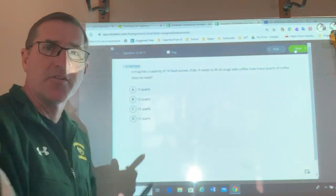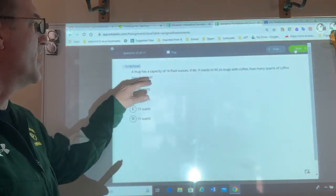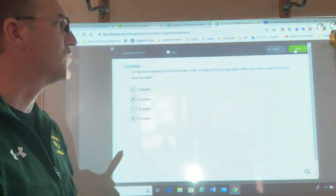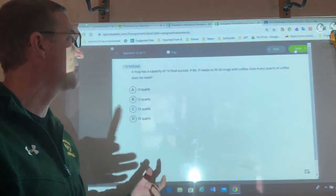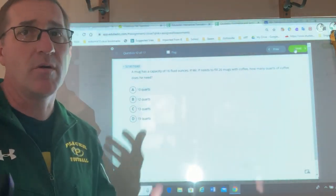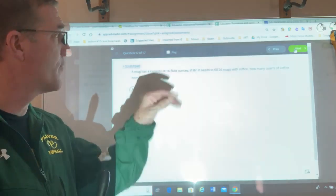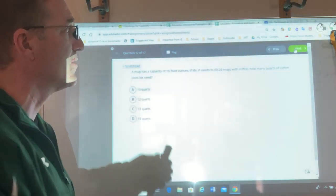Okay, Pac-Manians, here we're getting to the word problems now. A mug has a capacity of 16 fluid ounces. If Mr. P needs to fill 26 mugs with coffee, how many quarts of coffee does he need? Pause per second. What do I need to know first? I want to go from ounces to quarts because it wants me to find quarts.